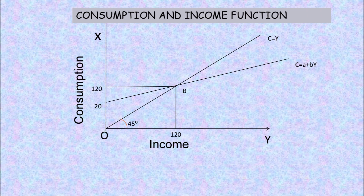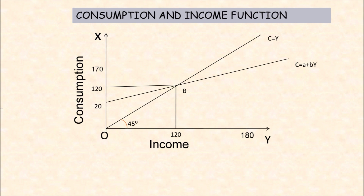The line passes from 20, and when income is 120, consumption is also 120. So they meet at point B, which is called the break-even point. This point divides both consumption and income equally.